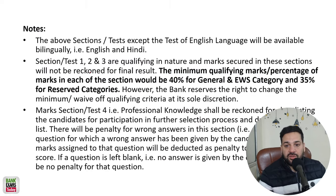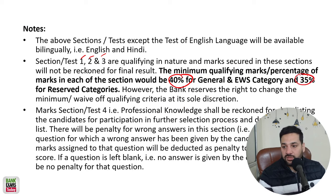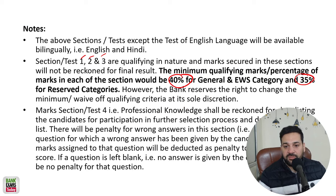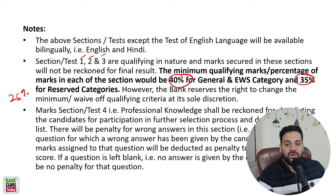Tests 1, 2, and 3 are of qualifying nature — 40 percent marks for General and EWS category and 35 percent for reserved category. There is a negative marking of 25 percent, meaning one-fourth marks are deducted per wrong answer.